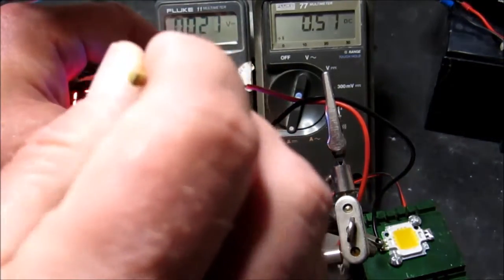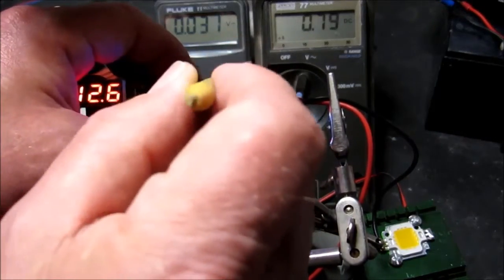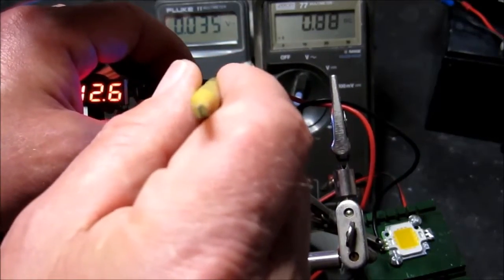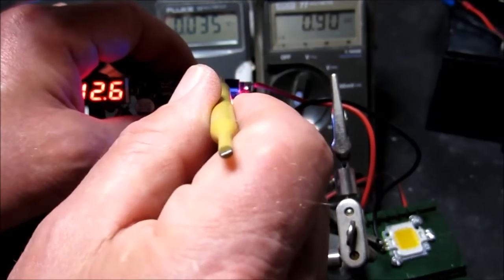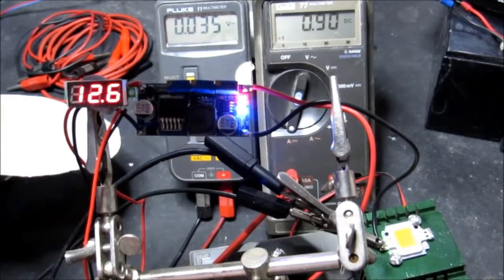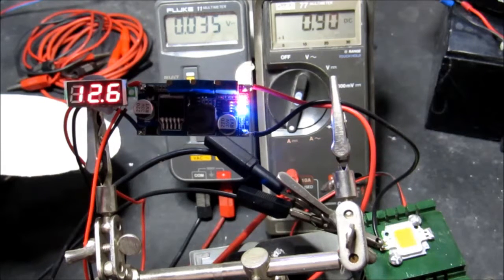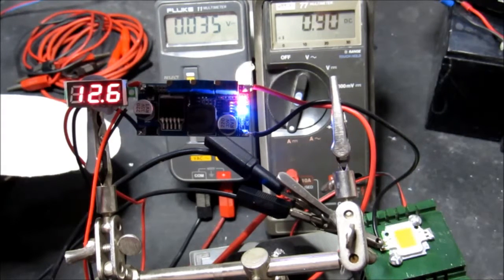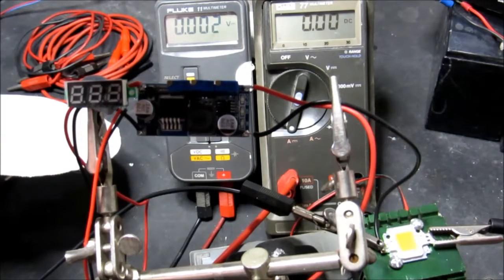That's with the far right hand potentiometer. So having set that to the output current limit that we want, it's now time to put it across the LED itself. So now I'm going to switch on the power.